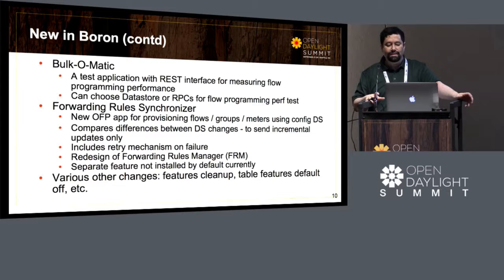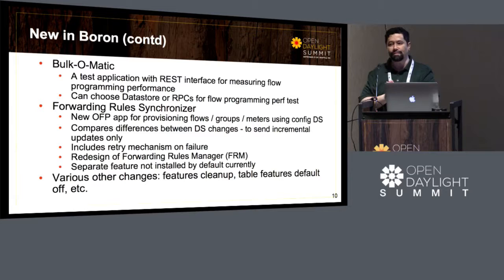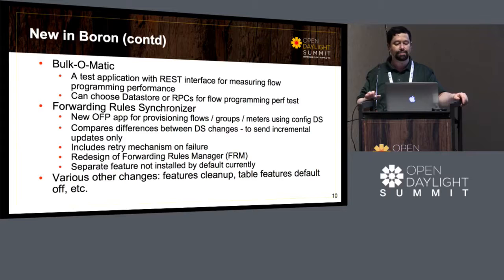An additional application added inside OpenFlow plugin is the Forwarding Rules Synchronizer — a new application for provisioning flows, groups, and meters with the config data store. It compares differences in the config between data store changes and sends only incremental updates, including some retry mechanisms on failure. It's a redesign of the Forwarding Rules Manager, though it's still a separate feature that has not been enabled by default currently.